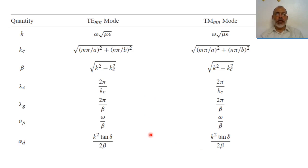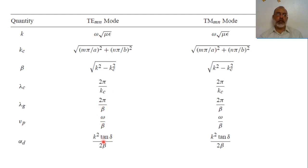These coefficients are the same for any closed waveguide structure, except the cutoff wave number, which is specific to the rectangular waveguide. The phase velocity, the guided wavelength, and the dielectric attenuation coefficient are all the same for any waveguide structure.